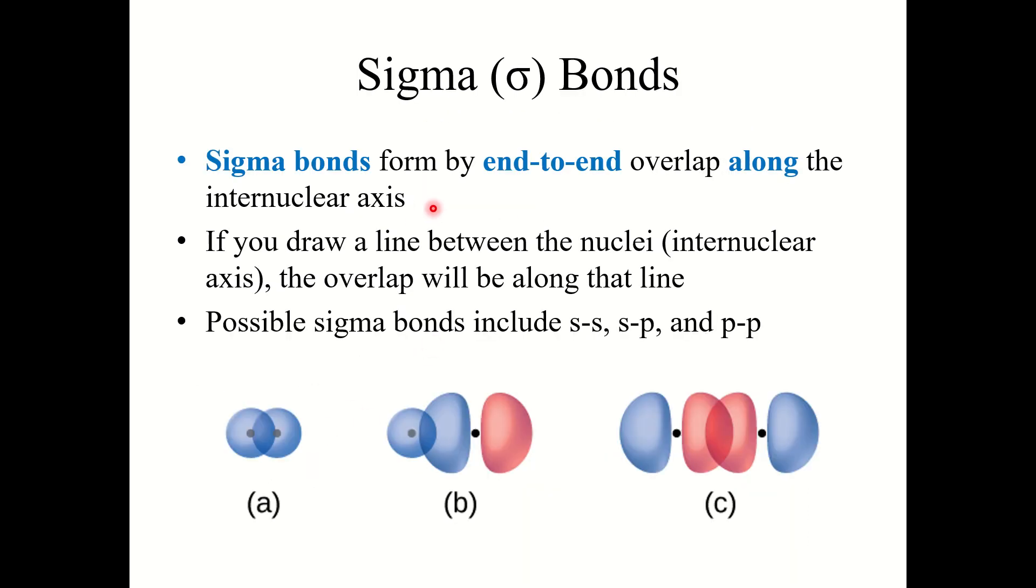Okay, so there are two types of bonds we are going to discuss here in valence bond theory. First, there are sigma bonds. Now sigma bonds form by end-to-end, or sometimes I call it head-to-head overlap, along the internuclear axis. So if you draw a line between the nuclei or along that internuclear axis, the overlap will be along that line.